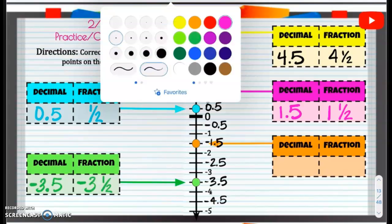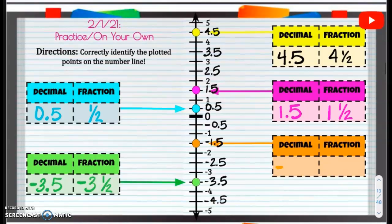All right, the orange, the decimal, we have negative 1 and 1 half. Negative 1 and 1 half. That fraction is going to be negative 1 and 1 half.